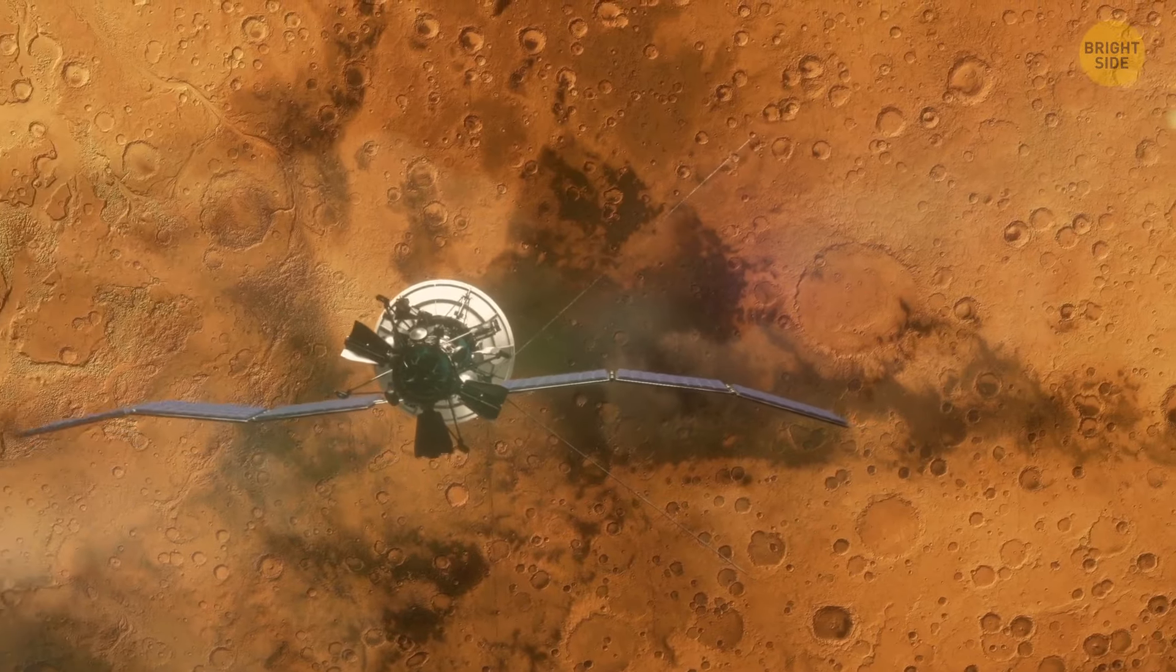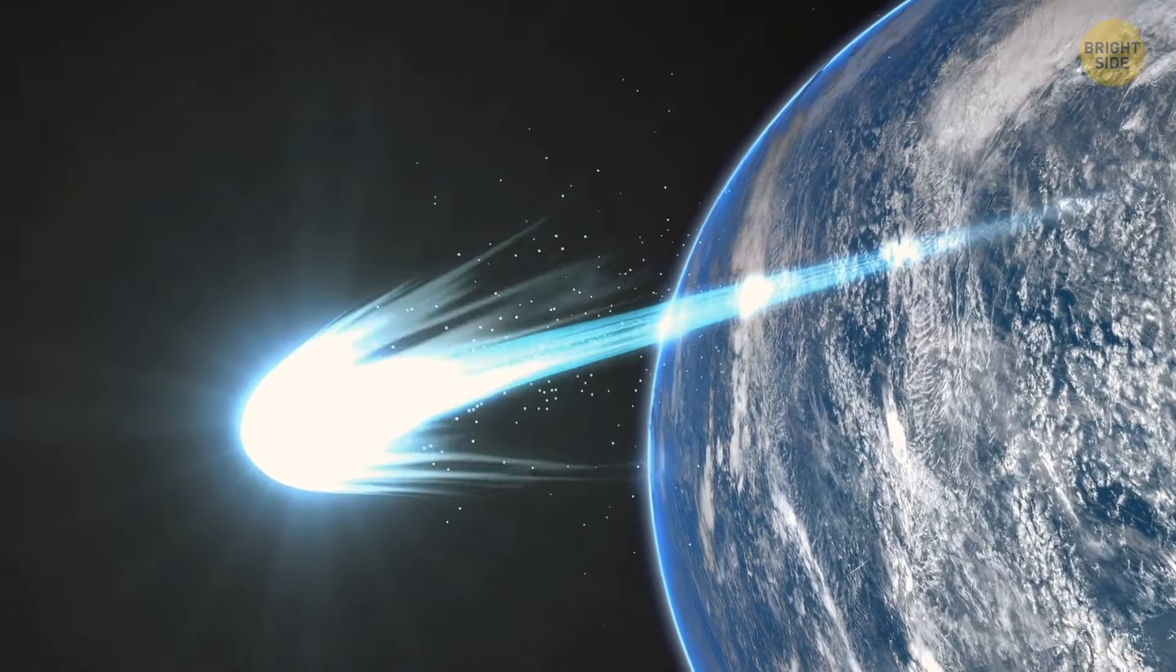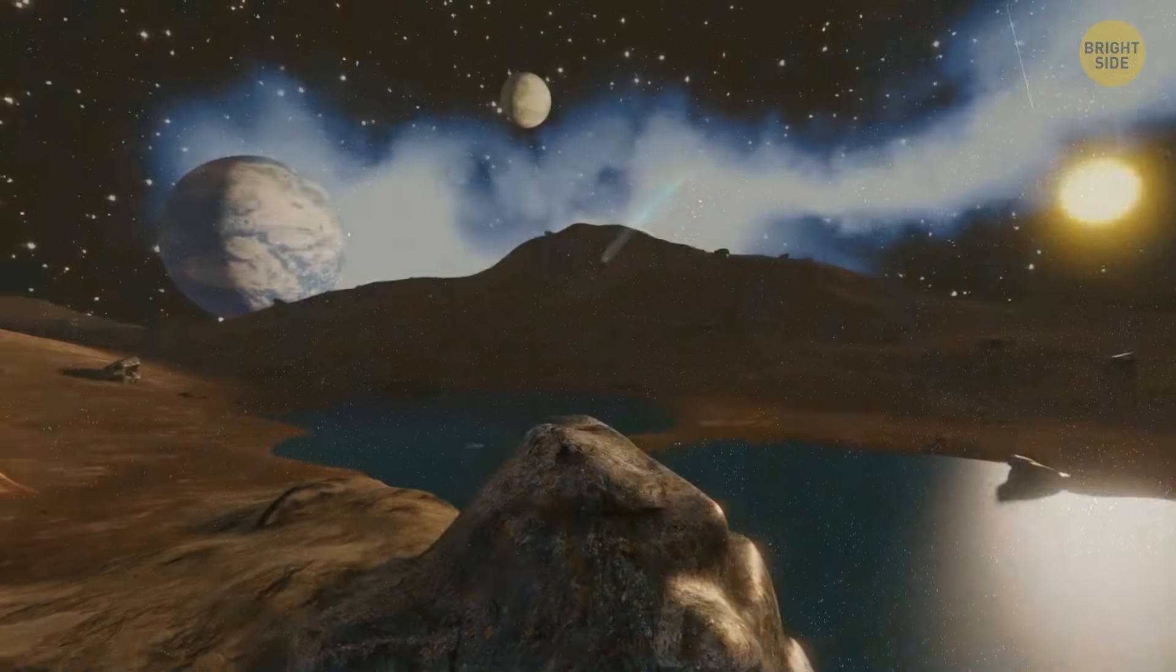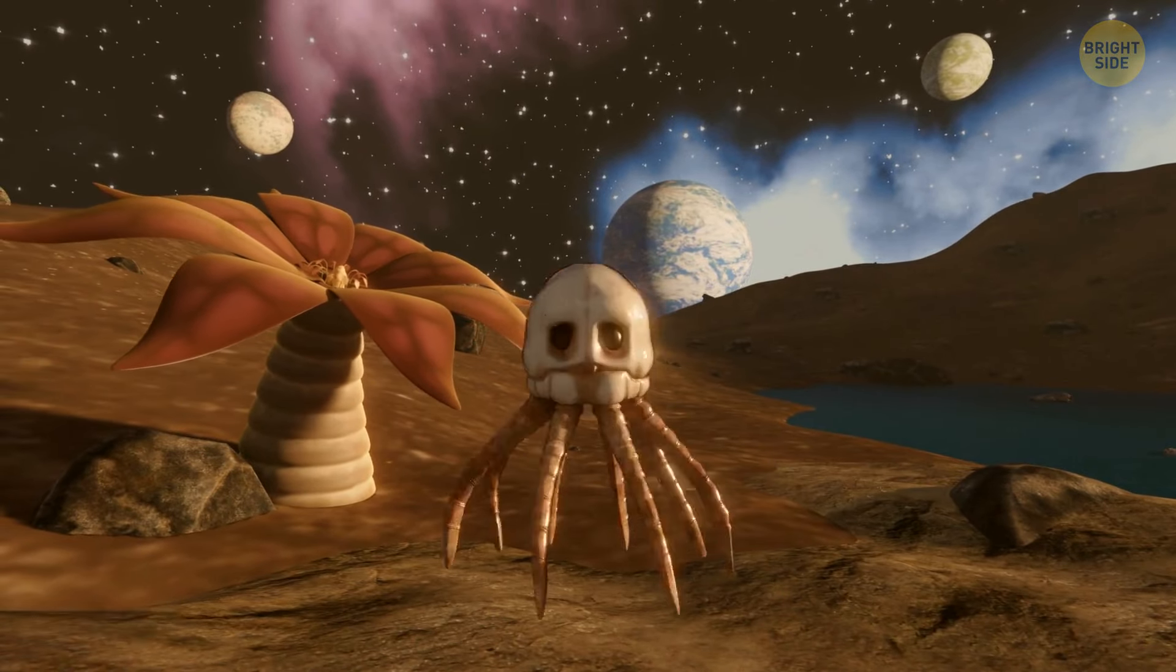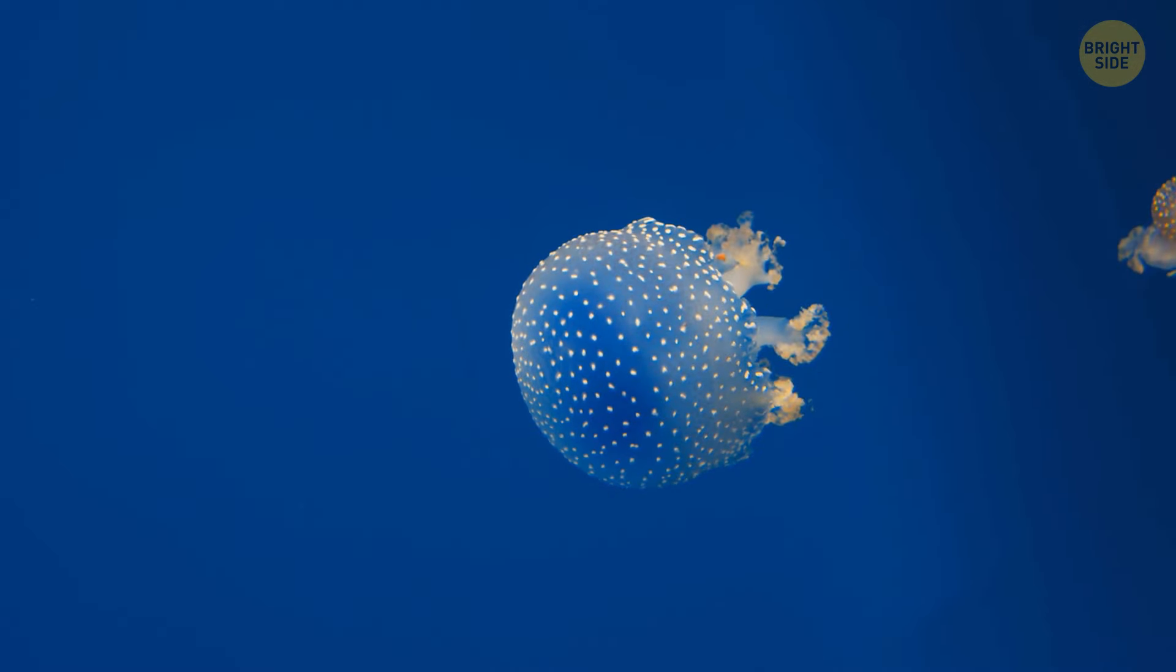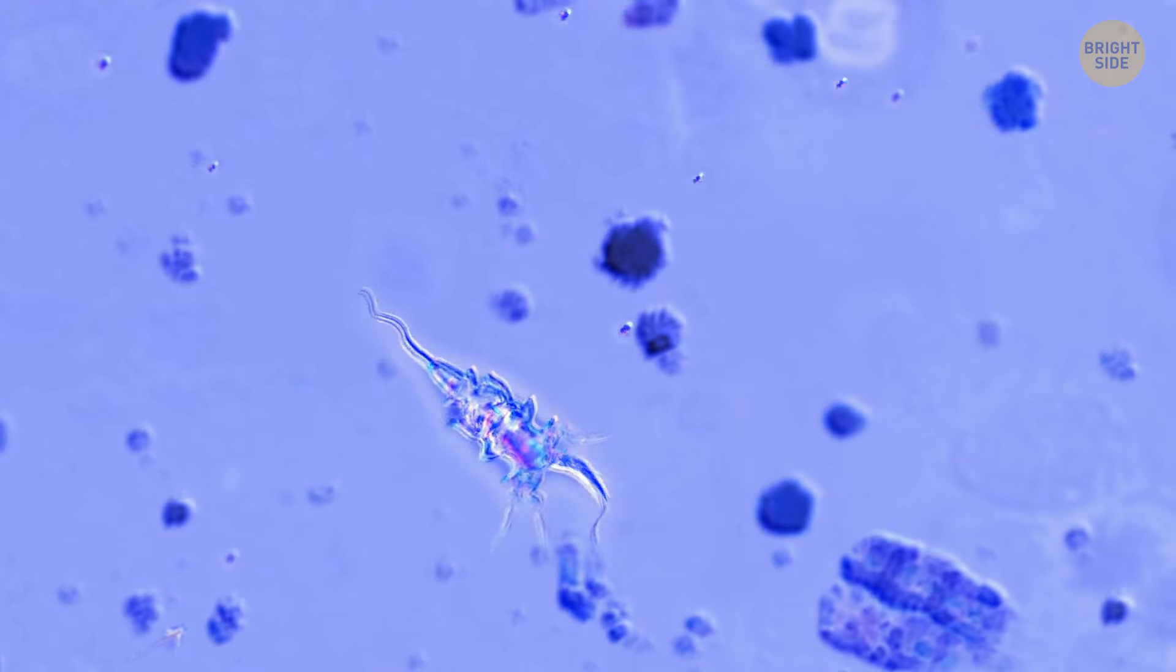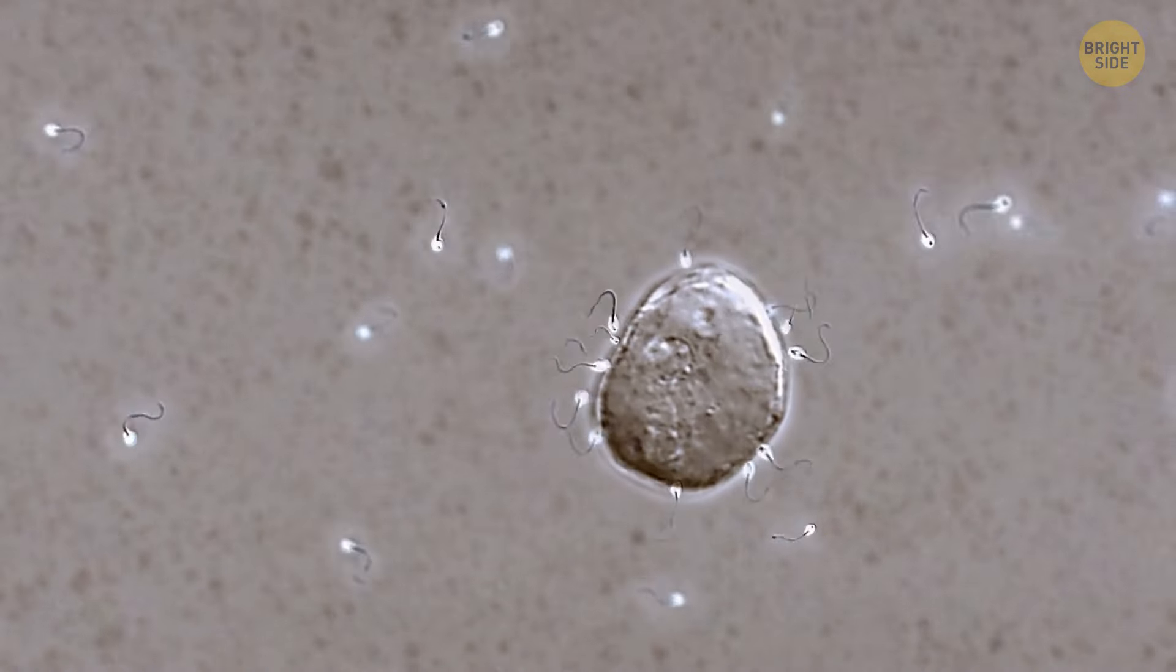Or maybe it wasn't Mars. Others suggest that life might have hitched a ride on comets from other star systems, traveling through space until they landed here. But if life did come from somewhere else, it just raises more questions. For example, how did life start in space in the first place? This is why scientists are a bit skeptical about this idea, which is called panspermia. In any case, the origins of life are a huge mystery, and we'll need decades of research to figure out the full answer.